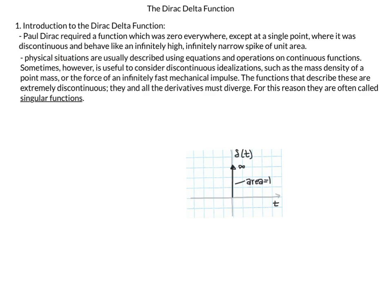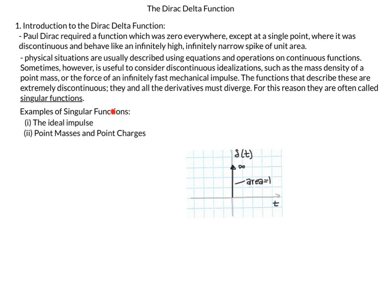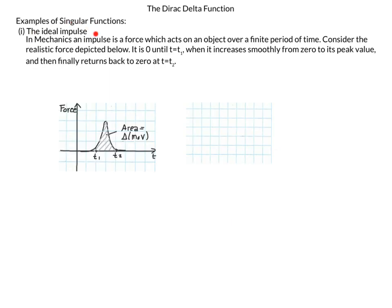In physical situations, it's useful to consider discontinuous idealizations — simplifications such as the mass density of a point mass or the force of an infinitely fast mechanical impulse. The functions that describe these are extremely discontinuous; they and all their derivatives must diverge. For this reason, they are often called singular functions. Examples include the ideal impulse, point mass, and point charges.